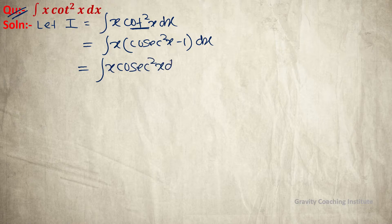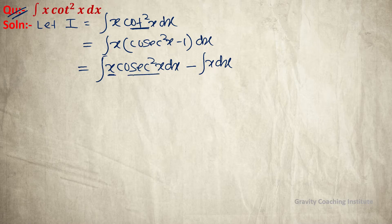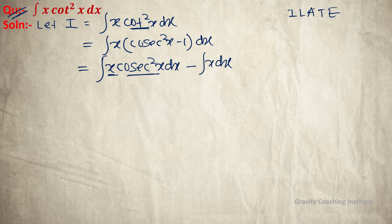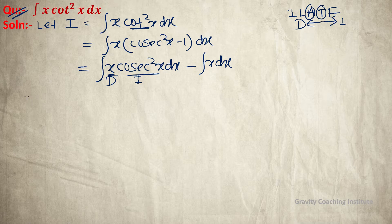So the integral becomes integration x cos square x dx minus integration x dx. Now we use integration by parts. According to the ILATE rule, x is an algebraic function and cos square x is a trigonometric function, so we choose x to differentiate and cos square x to integrate.